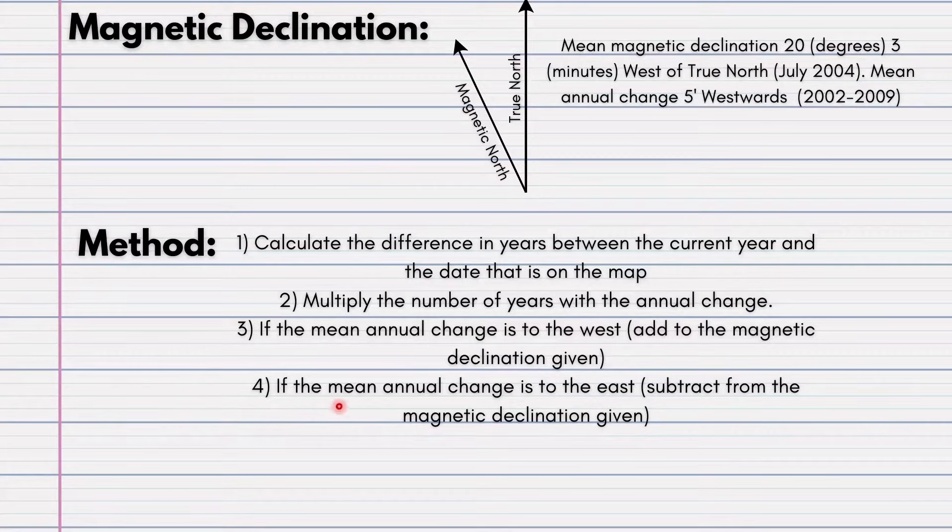Step 4. If the mean annual change is to the east, subtract from the magnetic declination given. As you can see, it is different from step 3. But if you do have a South African map, it will always be westwards.